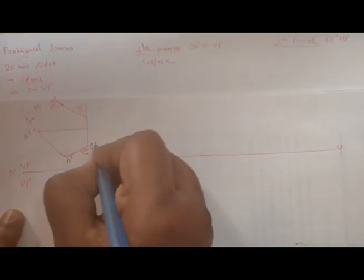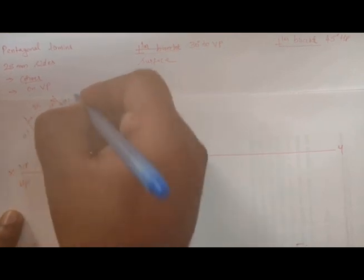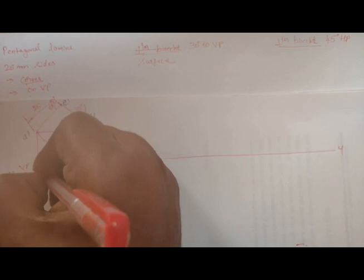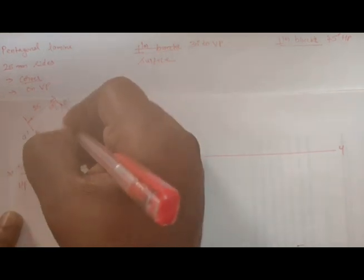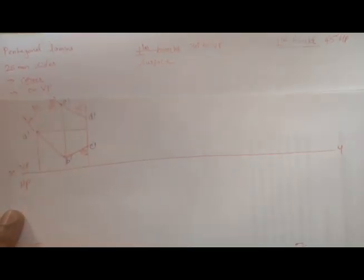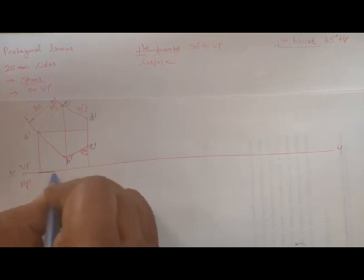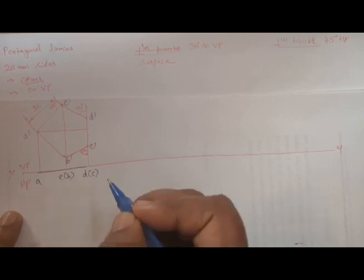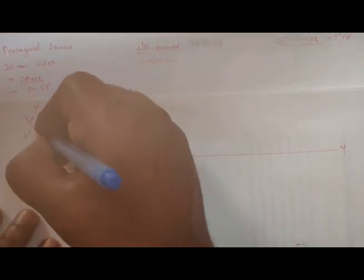Label the points as a dash, b dash, c dash, d dash, and e dash. Draw this line — in the top view it is going to be a thick line. A is seen, E is seen, B is not seen, D is seen, C is not seen.